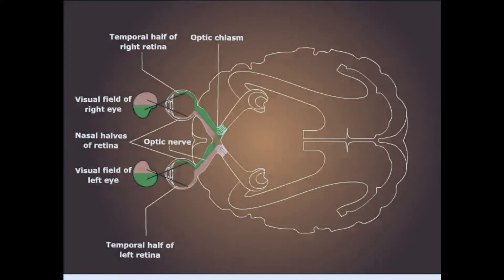Therefore, the left hemisphere perceives images from the right visual field, while the right hemisphere perceives images from the left visual field.